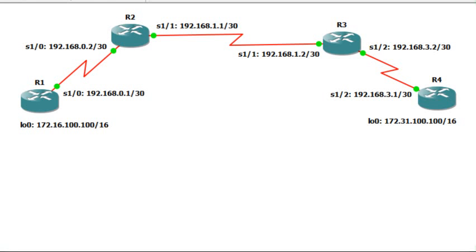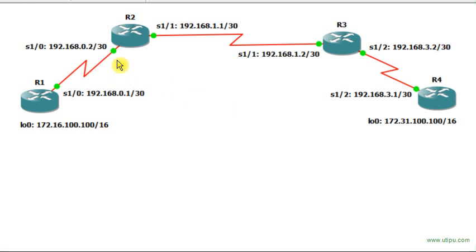Hello everyone, today I will show you how to use the ping tool inside a Cisco router. First, let's look at the network design we have. We have four routers: R1, R2, R3, and R4, connected as shown on the diagram with respective IP addresses using serial lines. Router R1 has a loopback interface 172.16.100.100/16 and router R4 also has a loopback interface 172.31.100.100/16, for emulating or simulating hosts on networks.